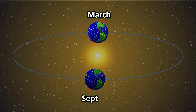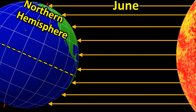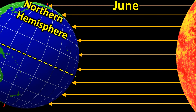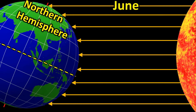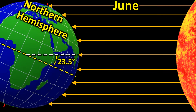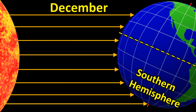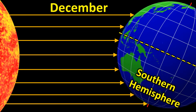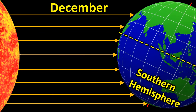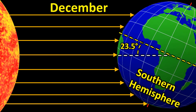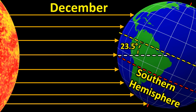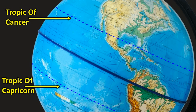Only during March and September does the sun shine directly over the equator. In June, due to the axial tilt, the northern hemisphere is tilted toward the sun, so the sun appears to shine directly 23.5 degrees north of the equator — on the line we call the Tropic of Cancer. Then in December, it is the southern hemisphere that is tilted toward the sun, so the sunlight falls directly 23.5 degrees south of the equator — on the line we call the Tropic of Capricorn. If you look at a globe, you will see these two lines marked as dotted circles above and below the equator.